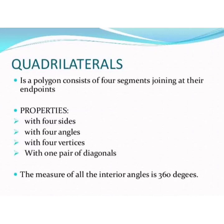Now, properties of quadrilaterals. A quadrilateral has 4 sides, 4 angles, 4 vertices, and 1 pair of diagonals. The measure of all the interior angles is 360 degrees.